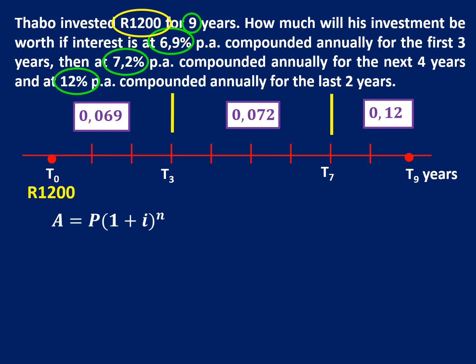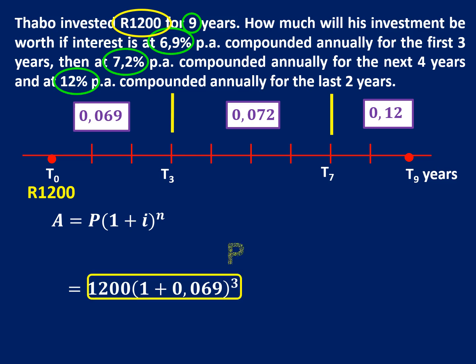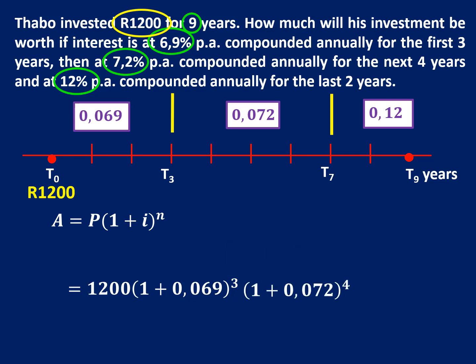Using our compound interest formula: the first R1,200 is going to earn 0.069 interest for three years. Instead of pushing equals, what must come next is the interest bracket for the next period — so I include (1 + 0.072) to the power of 4 for the next four years.